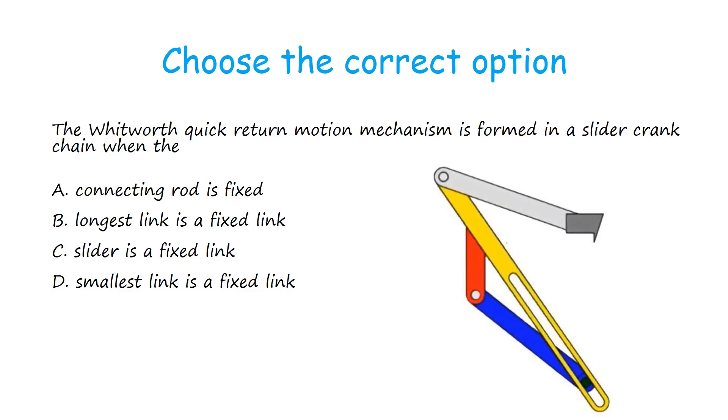Choose the correct option. The Whitworth quick return motion mechanism is formed in a slider crank chain when the: